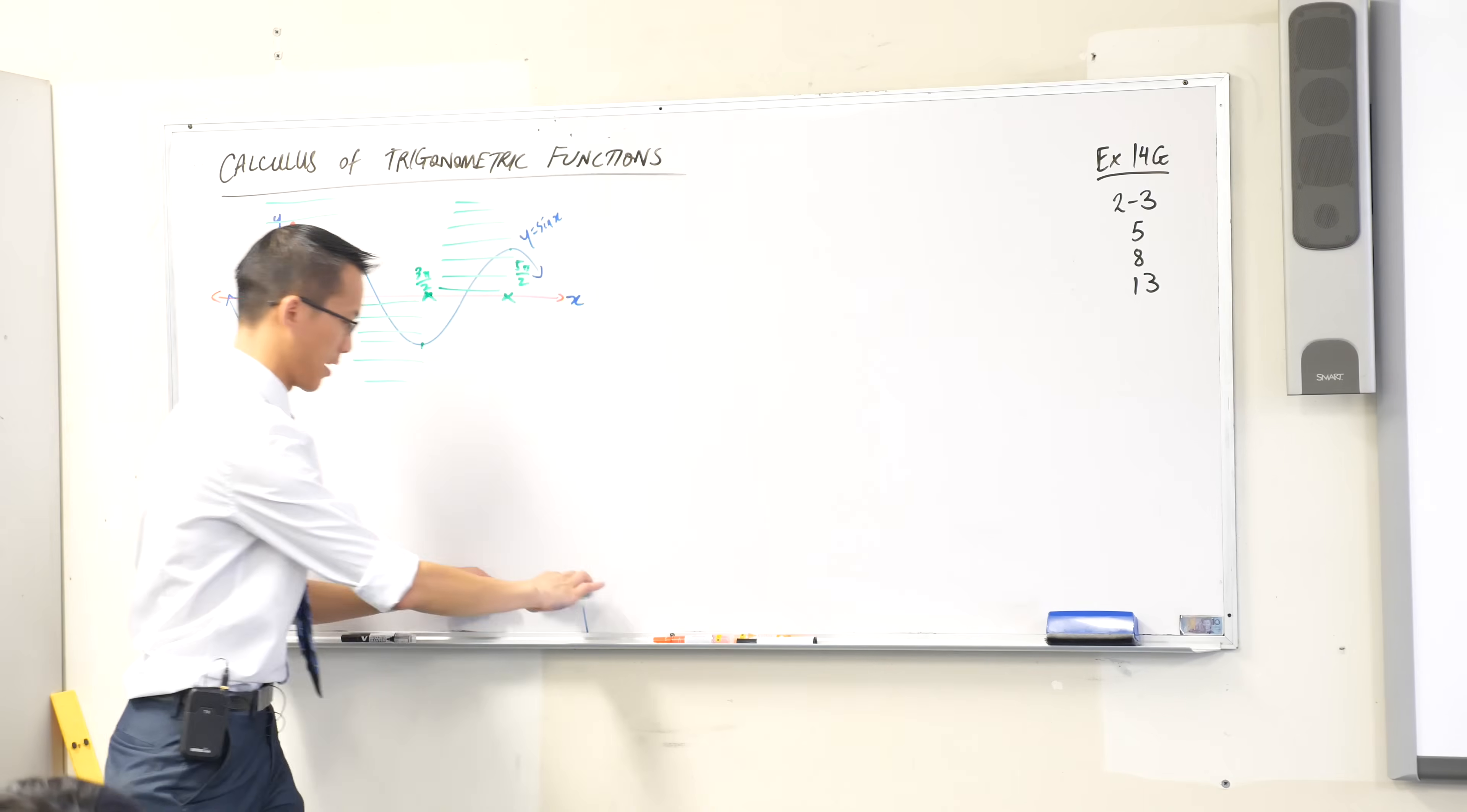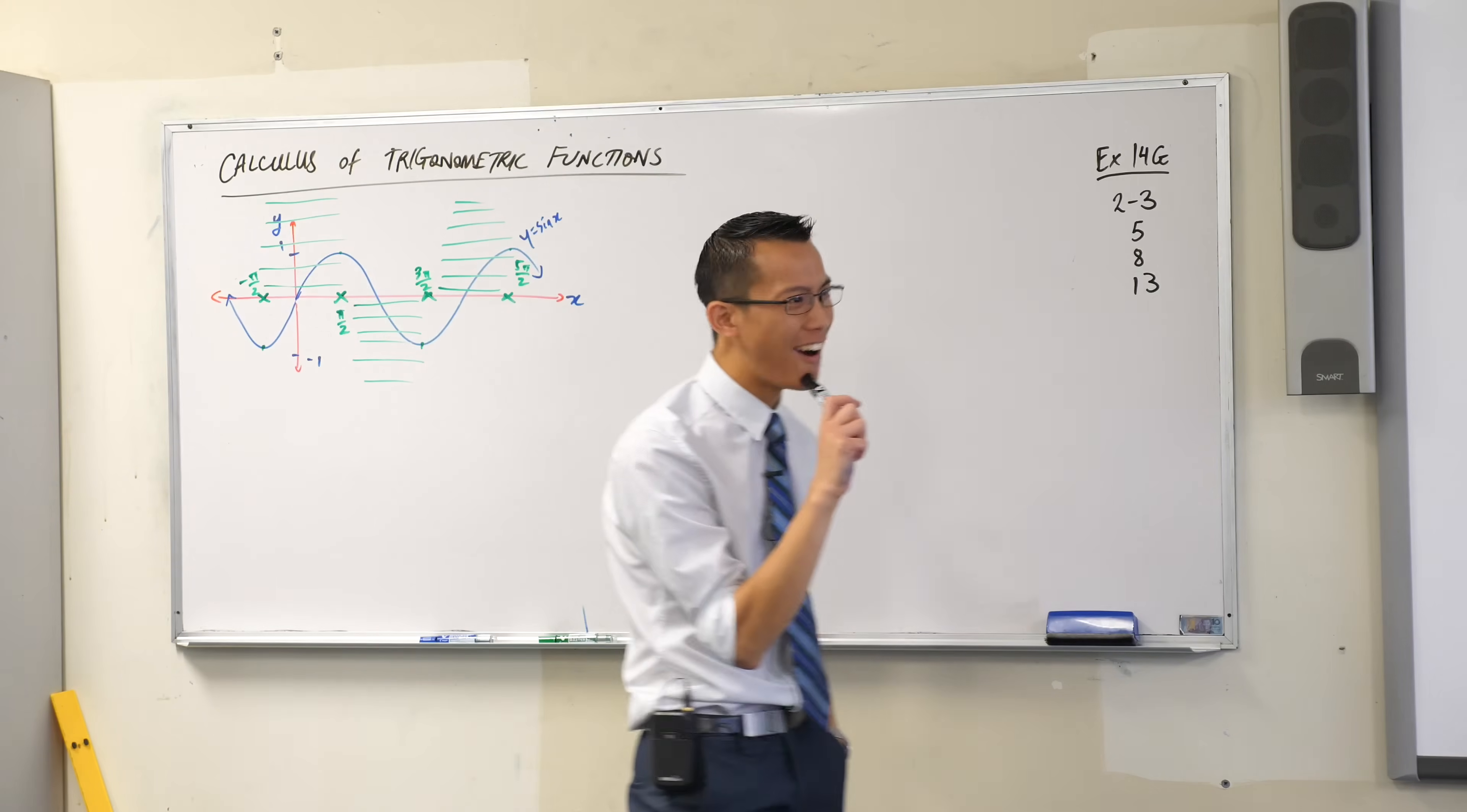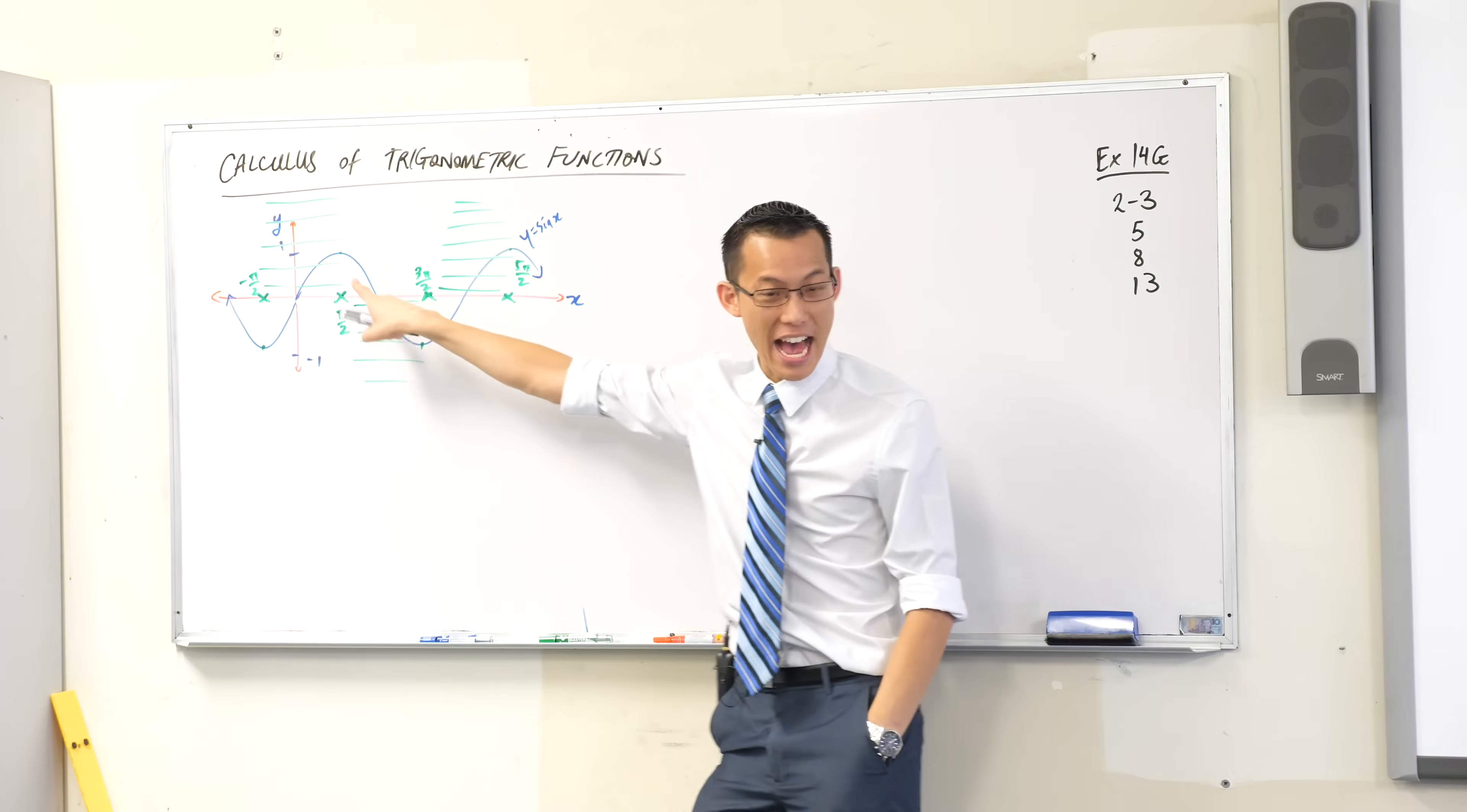Now think about this for a second. The gradient function is a periodic function, it goes up and down and up and down and it goes through these particular x-intercepts pi on 2, 3 pi on 2, etc. If only I knew a function that was periodic and went up and down and up and down and had these particular values that it passes through.